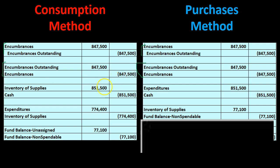Now we have the key difference between the two methods. Under the consumption method, we record the inventory in the supplies asset account — more of an accrual basis approach — and then later record expenditure at the amount consumed using a cost-of-goods-sold type calculation: beginning inventory plus purchases minus ending inventory. Under the purchases method, we record the expenditure at the point of purchase, making it closer to a cash basis method. In this case we paid cash, so the expenditure is recorded at the purchase price.